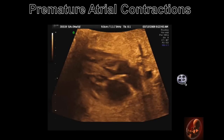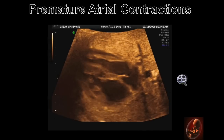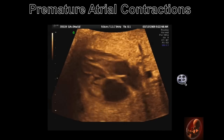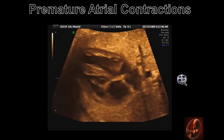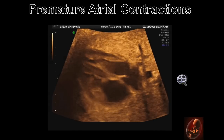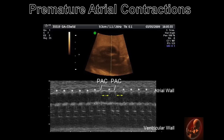This is a scene clip of a fetus with premature atrial contractions. This is an M-mode recording obtained through the right atrial wall and the left ventricular wall. Notice the premature atrial contractions are followed by a long pause, represented by the yellow arrows. Identification of premature atrial contractions is best accomplished by placing the M-mode cursor through the atrial walls.